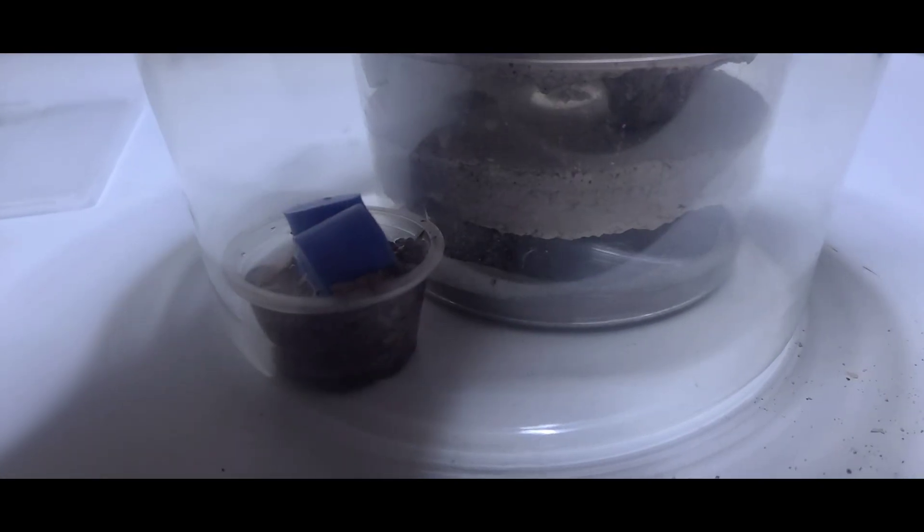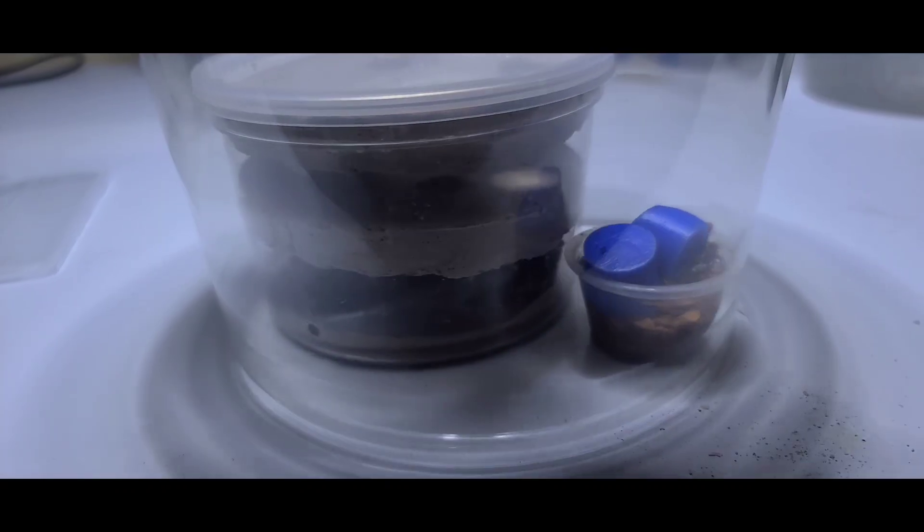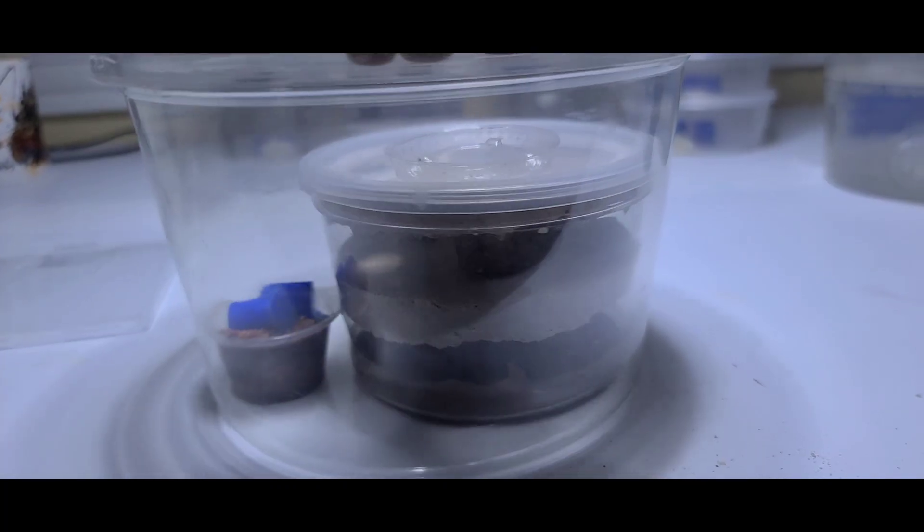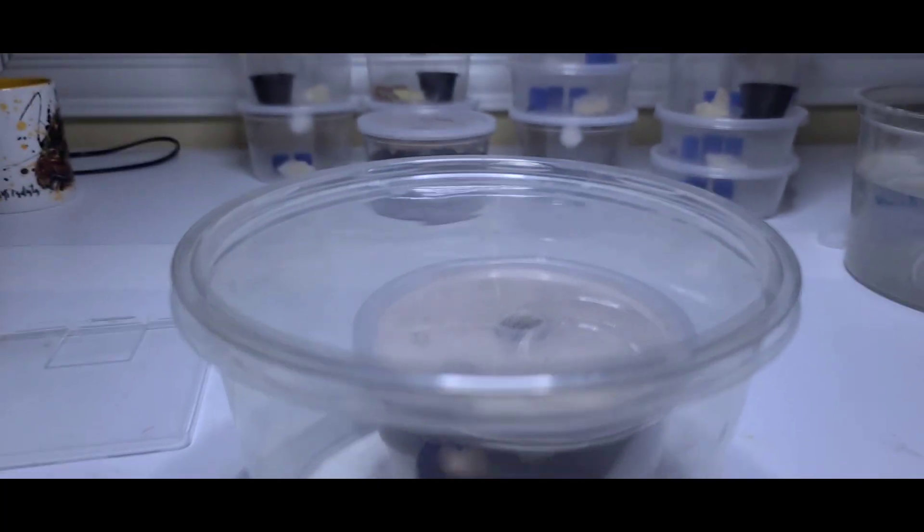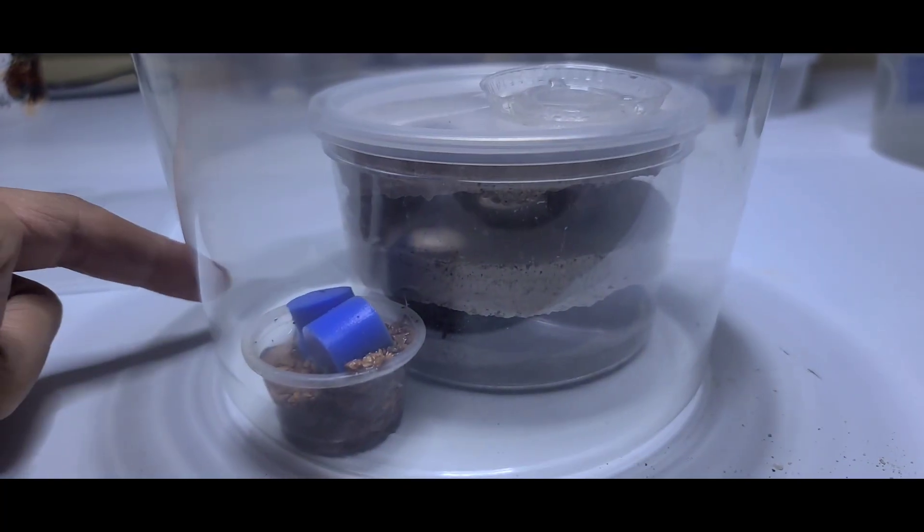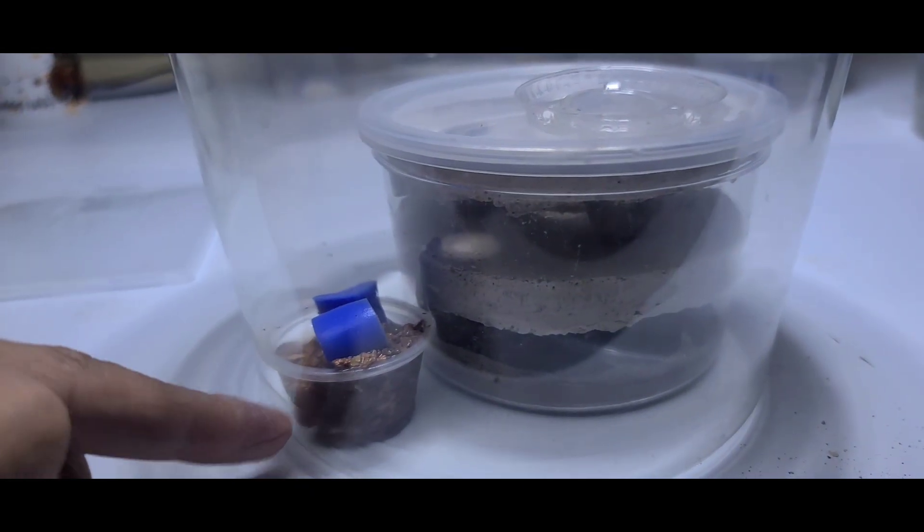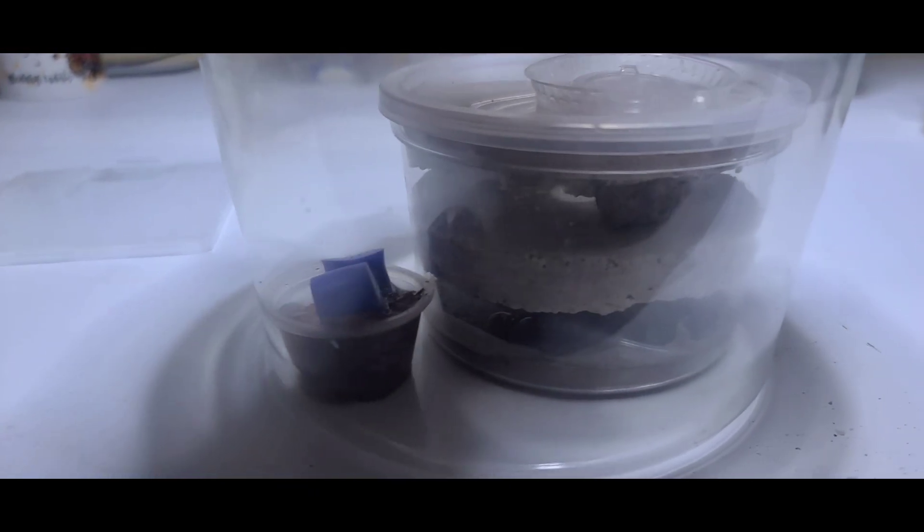This is how the colony should look at first once you finish putting all of them in the formicarium. You just have to wait a few days until the queens get situated. The final product should look like this - the workers can forage from the top or the bottom and can hydrate from inside or outside of the nest.